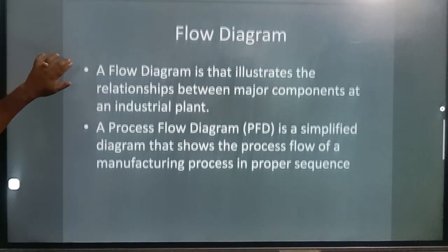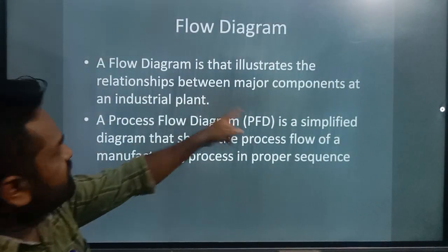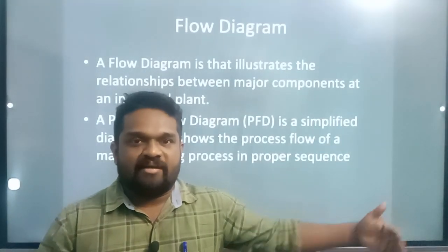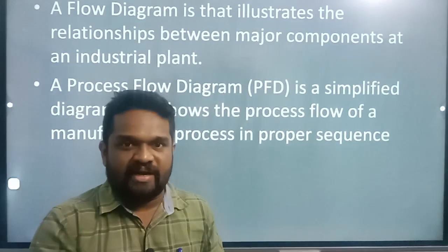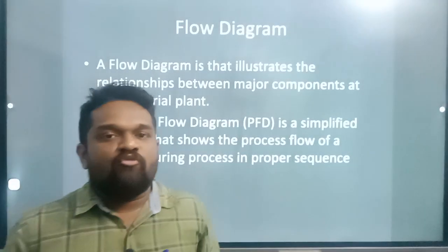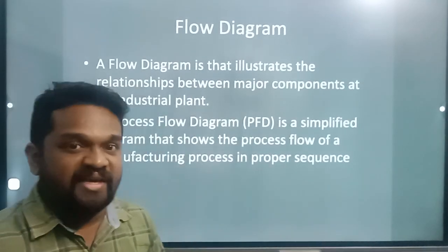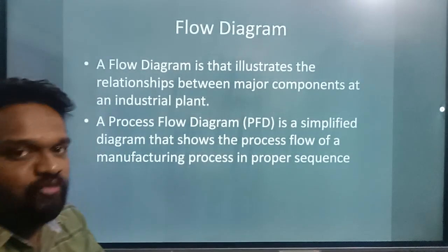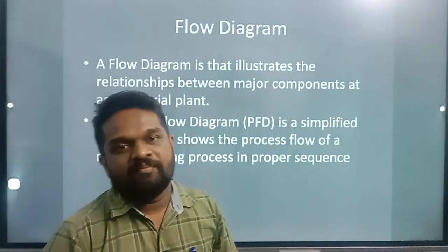Next, what is a flow diagram? The flow diagram shows relationships between major components — for example, testing lab, manufacturing, assembling, heating area — and different components and machines such as grinding, milling, and shaping. It is a pictorial representation, also known as the Process Flow Diagram (PFD), which shows the process flow of a manufacturing process in proper sequence.